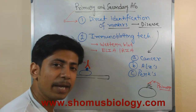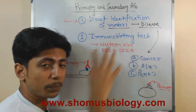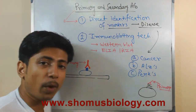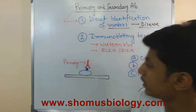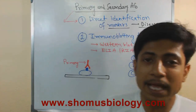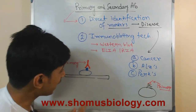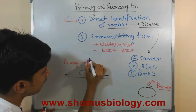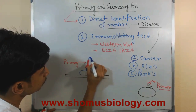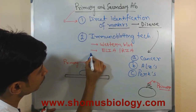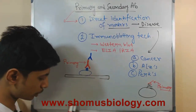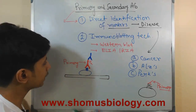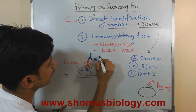Primary antibodies are required both in immunoblotting and in direct identification. But in immunoblotting we also require a different, new kind of antibody. This antibody is developed against the Fc portion of the primary antibody — that is the most important point. The Fc portion of the primary antibody is now targeted by the Fab portion of the secondary antibody.